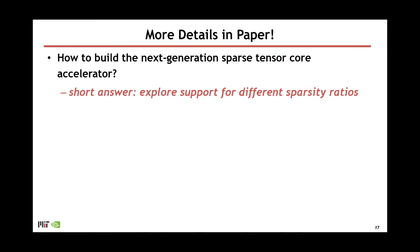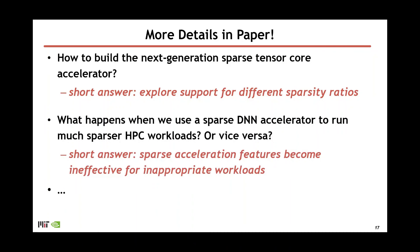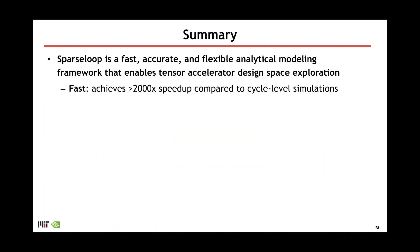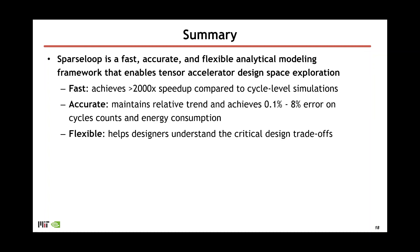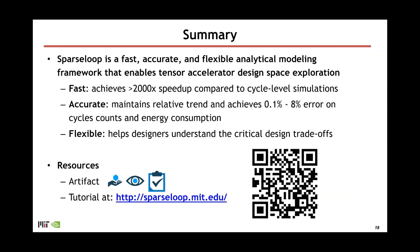Due to time constraints, I've omitted many details, but you can find more information in our paper. For example, can we use SparseSoup to build the next generation SparseTensorCore accelerator? Or what happens if we use the sparsity support in an accelerator designed for one workload to run a sparser HPC workload? Please check out the paper for more details. In summary, SparseSoup is a fast, accurate, and flexible analytical modeling framework that enables sparse tensor accelerator design space exploration. It achieves more than 2000x speedup, maintains relative trends with fairly accurate absolute estimations, and helps designers understand critical design trade-offs. We also have public resources including an artifact and a tutorial at SparseSoup.mit.edu.